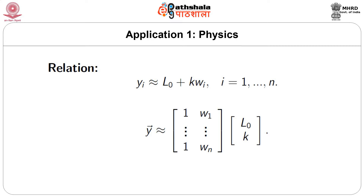This is a system of linear equations in two unknowns. Writing it in matrix notation, the vector Y is approximately equal to a matrix whose first column is all ones and second column is W1 to Wn, multiplied by the vector of unknowns [L0, K]. We immediately recognize this to be in the form tackled in the very first lecture. We will not go into mathematical details here, as our aim is to acquaint ourselves with application areas.